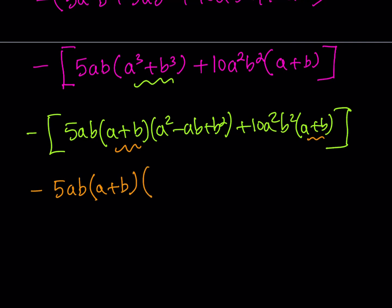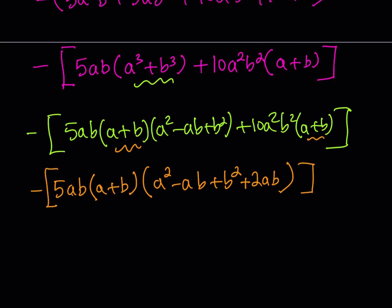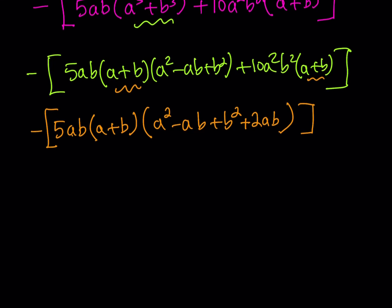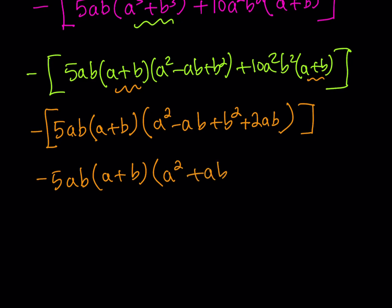Taking out negative 5ab times (a plus b), what remains inside is: from the first group, (a² minus ab plus b²), and from the second group, I need to check the sign — since the negative is on the outside, I get a positive 2ab inside. So the remaining bracket is (a² minus ab plus b² plus 2ab), and combining like terms gives (a² plus ab plus b²). Now a² plus ab plus b² is the sum of two squares form and cannot be factored further over the reals.